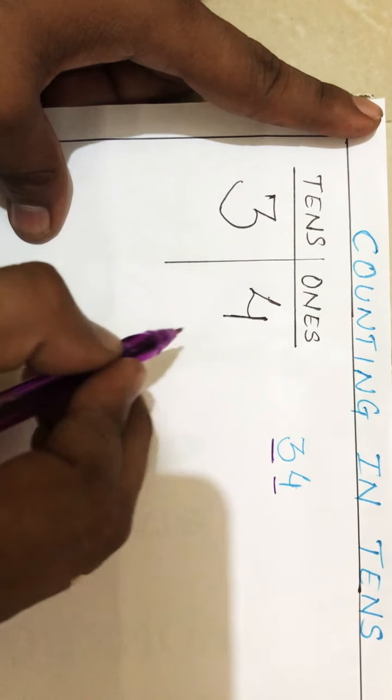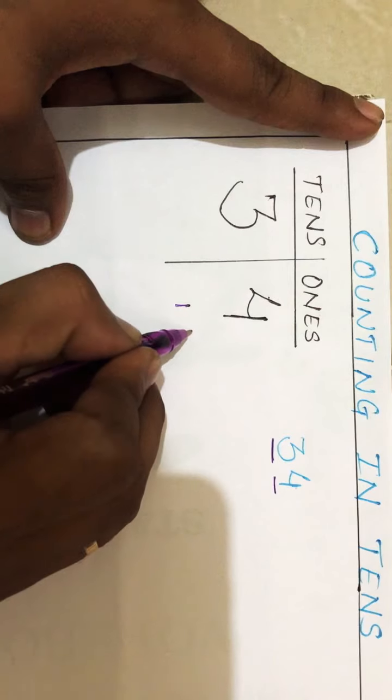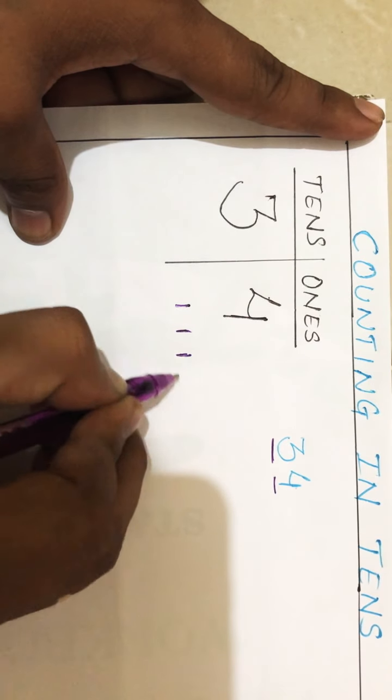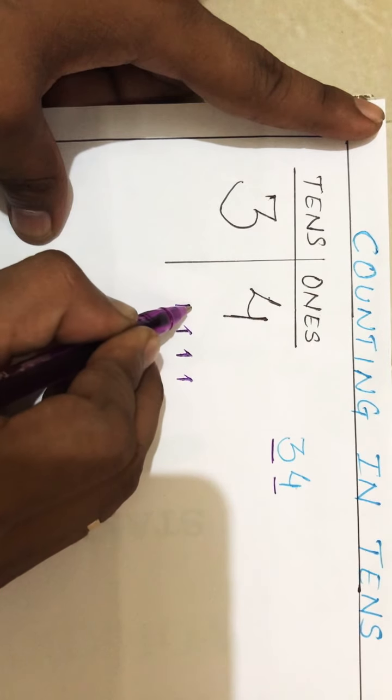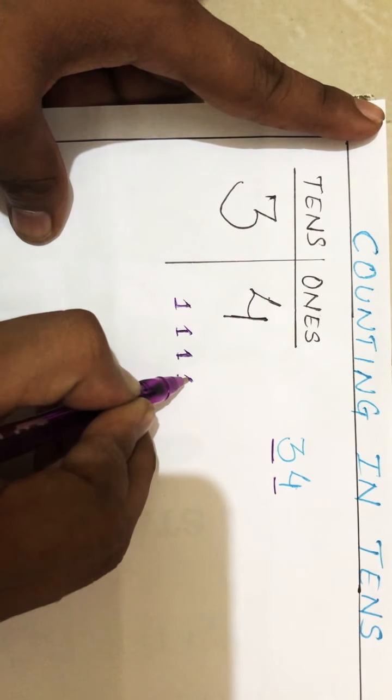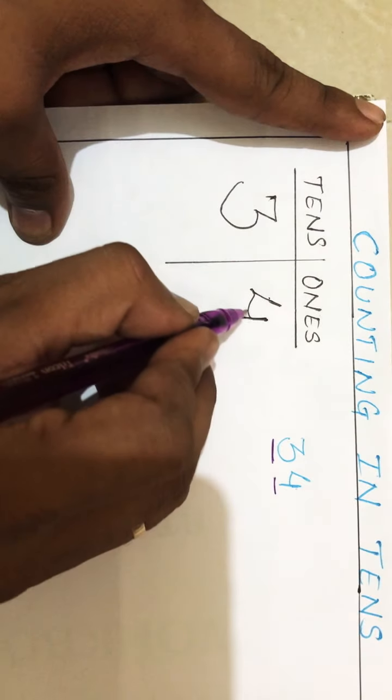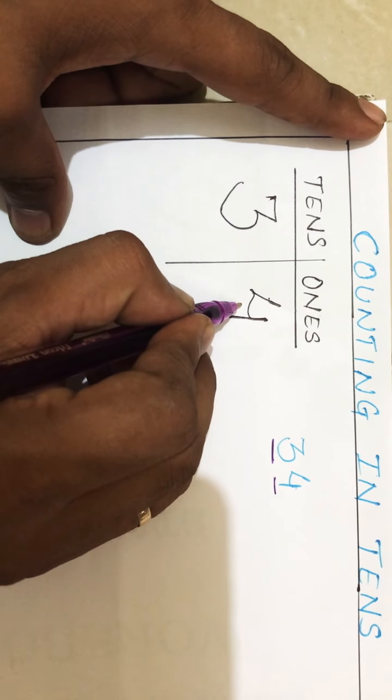Four ones - one, two, three, four. We count one, two, three, four, and the value is four as it is.